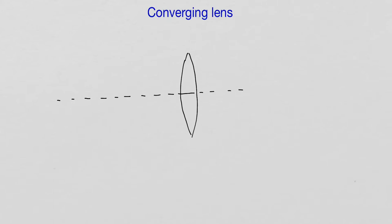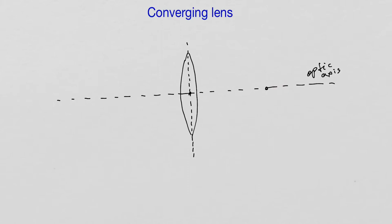Here is my converging lens. The center of the lens is indicated by this point right here. We know that a converging lens will focus light that is incident upon the lens from the left at a point somewhere behind the lens. This point is called the focal point, and it's labeled with F.